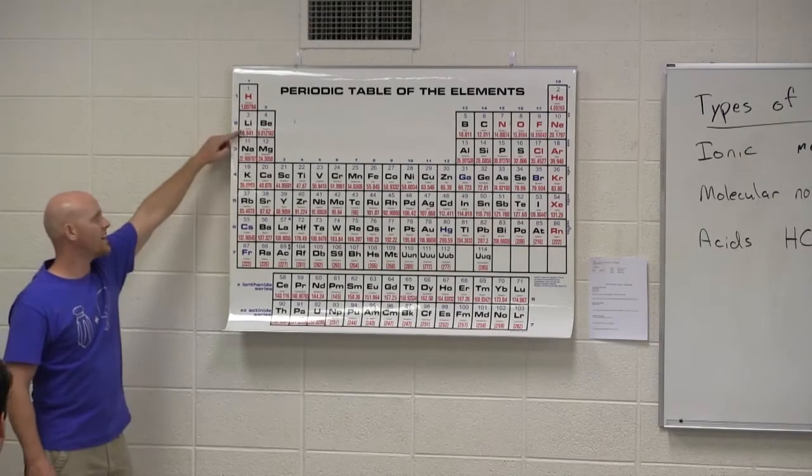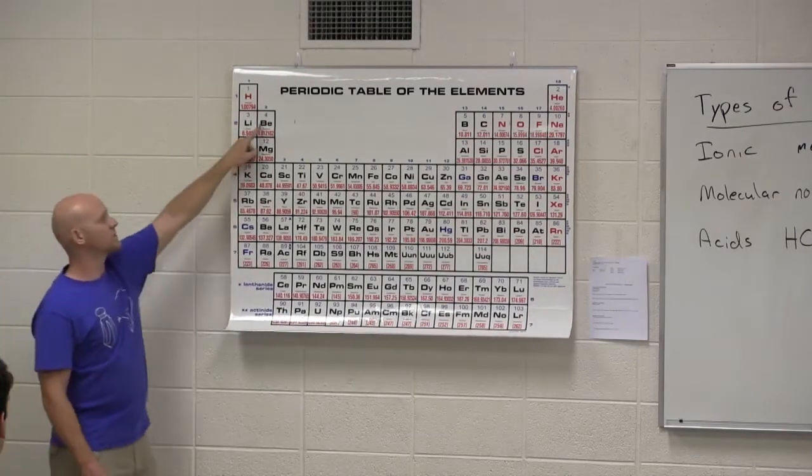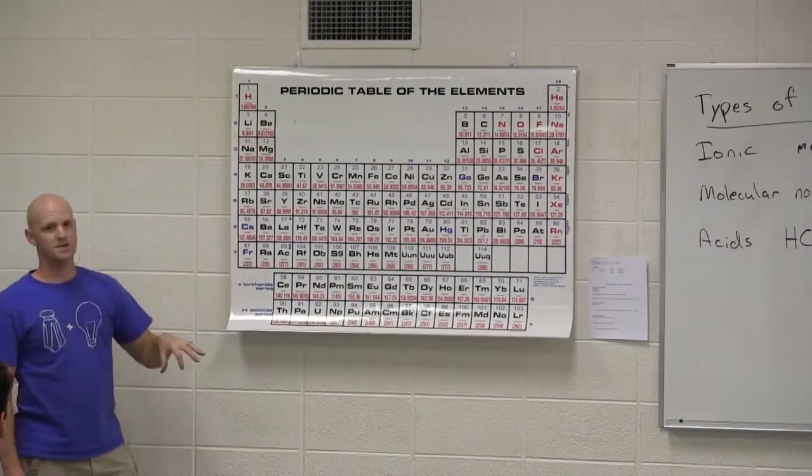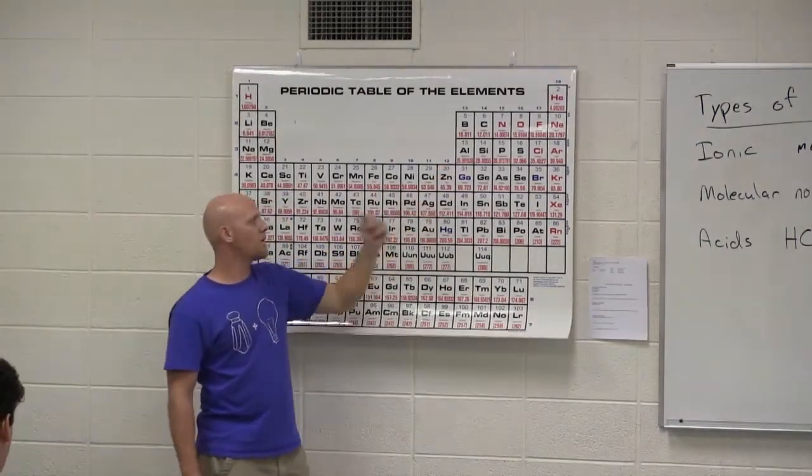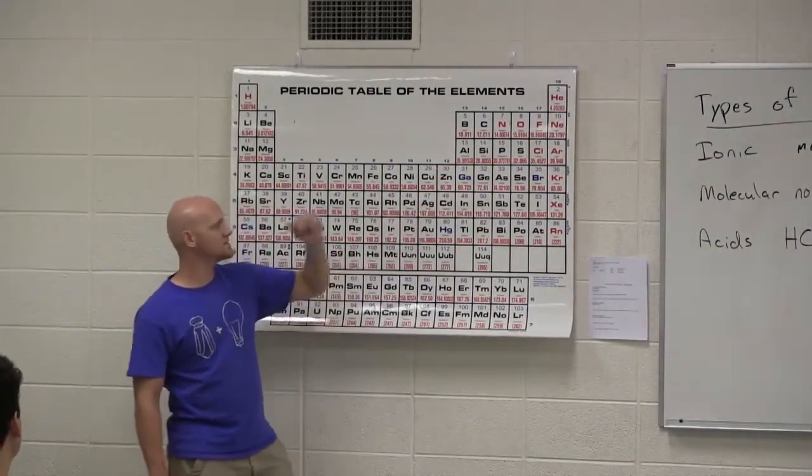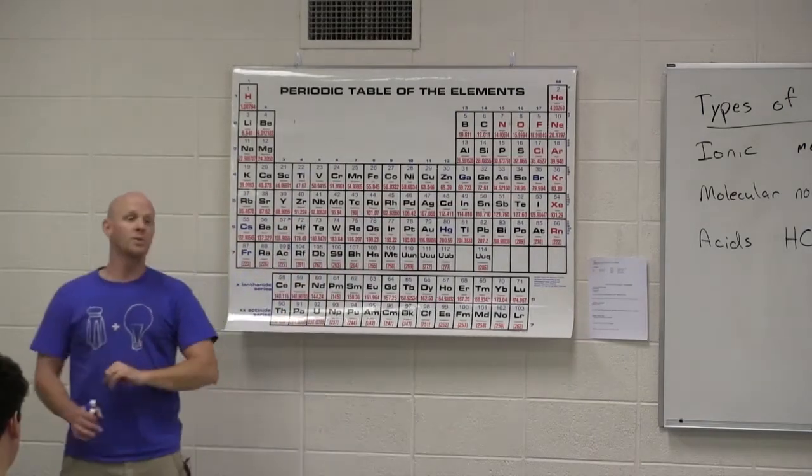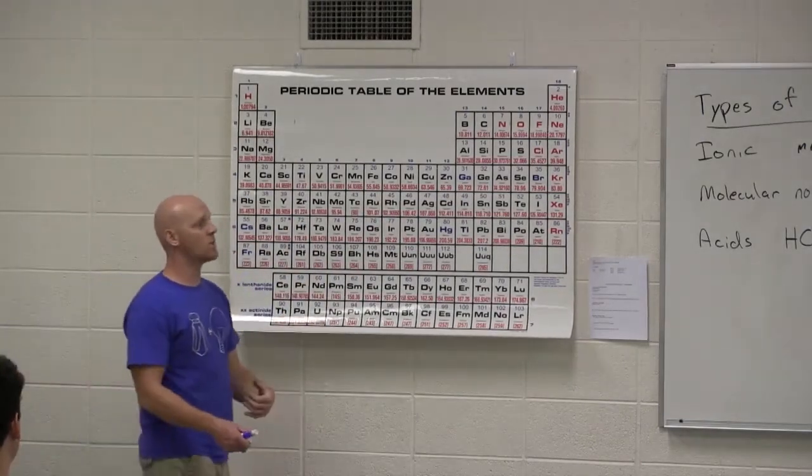Whereas for the group one metals in an ionic compound, they're always plus one. The group two metals in an ionic compound, they're always plus two. And like I said, aluminum in ionic compounds always plus three. Zinc and cadmium are always plus two in an ionic compound, and silver is always plus one in an ionic compound. So we don't have to worry about those, but the rest of them, we have to be more specific.